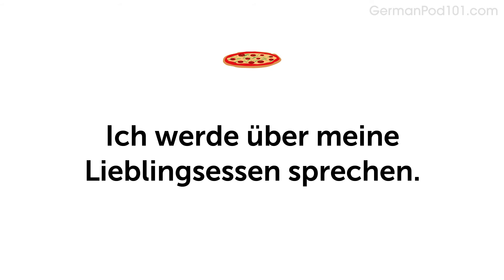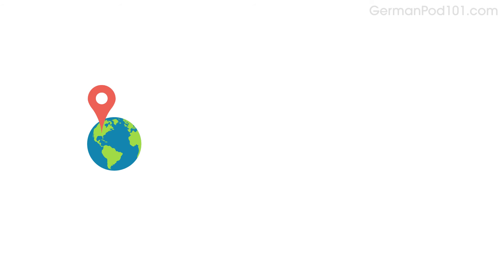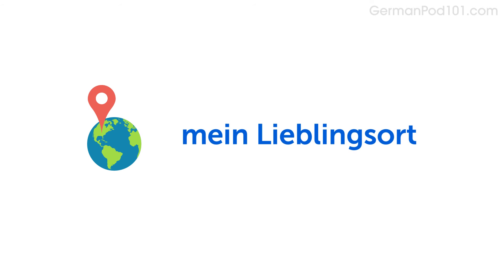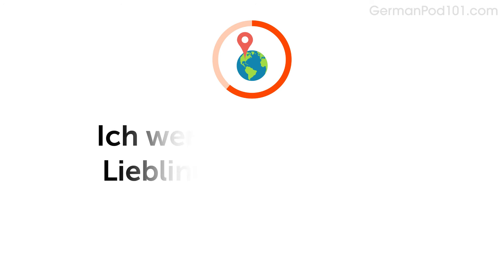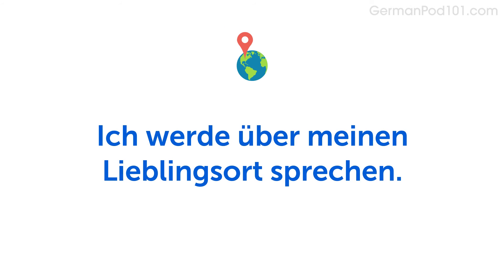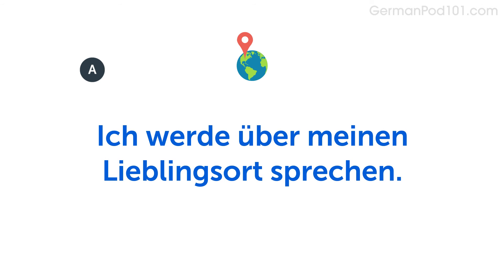Now answer the question saying you're going to talk about your favorite foods. Worüber wirst du sprechen? — Ich werde über mein Lieblingsessen sprechen. Now imagine you're going to talk about your favorite place. Do you remember how to say: my favorite place? Mein Lieblingsort. Say: I'm going to talk about my favorite place. Ich werde über mein Lieblingsort sprechen. Worüber wirst du sprechen? — Ich werde über mein Lieblingsort sprechen.